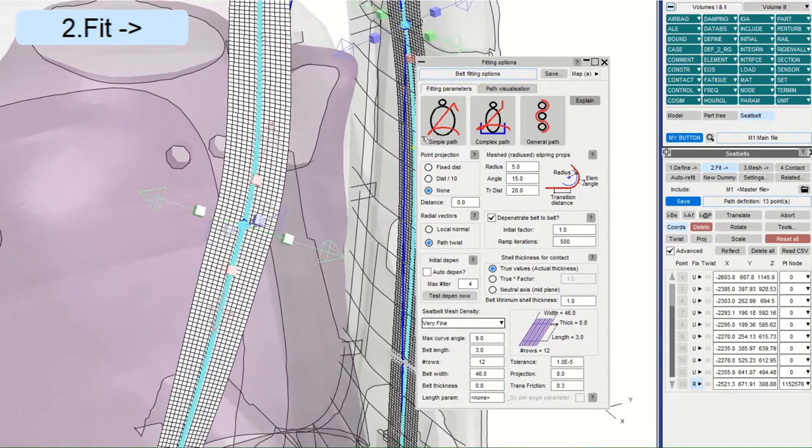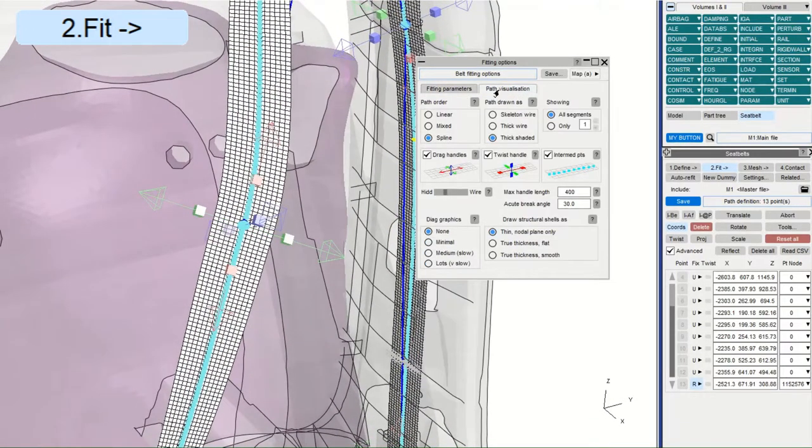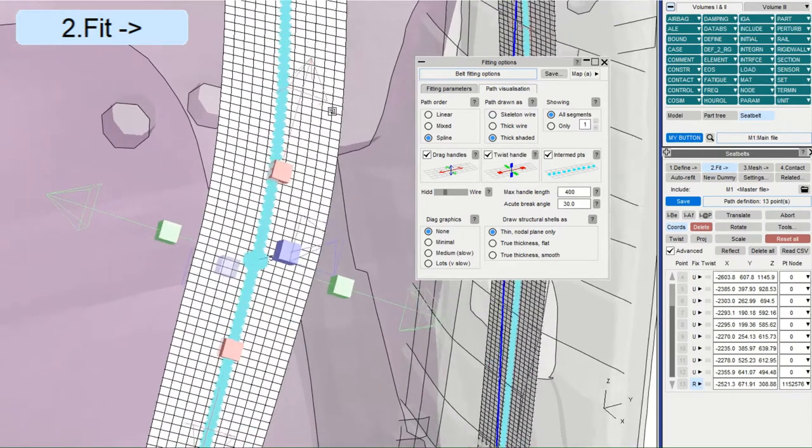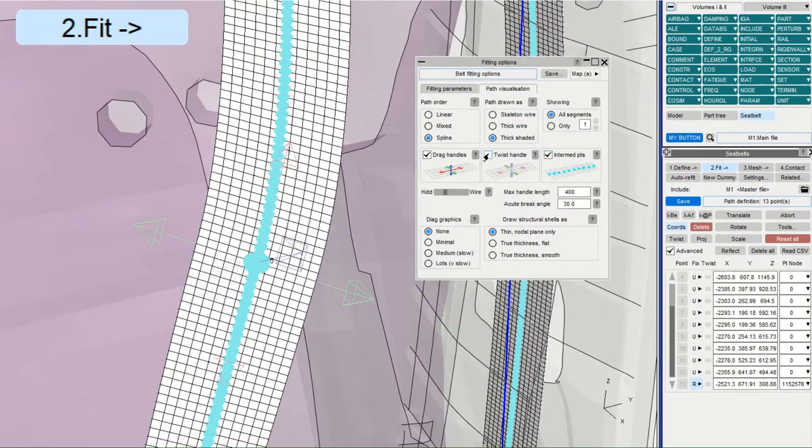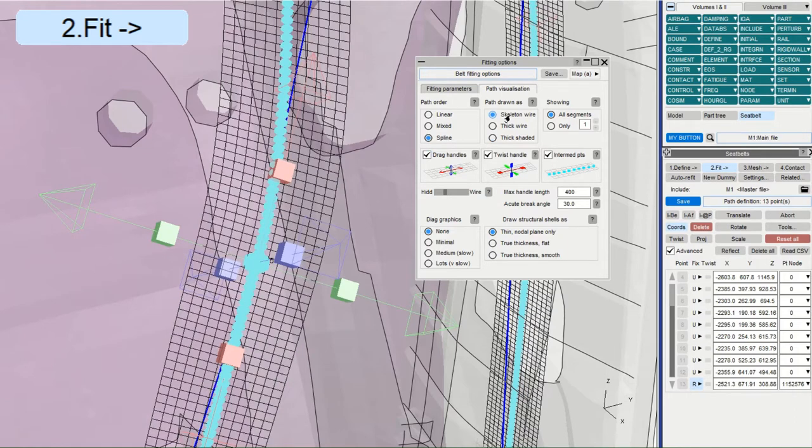The Fitting Options panel now has a new Path Visualization tab, where we can control visibility of the new intermediate points and the new drag handles. Here, you'll also find options to show the belt and surrounding shell parts with their true thickness in 3D.